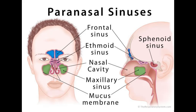Now for my favorite sinuses — the ethmoidal sinuses. They lie in the labyrinth of the ethmoid bone. We have three groups: an anterior group, a middle group, and a posterior group.